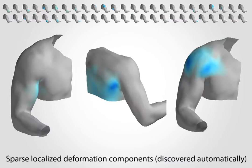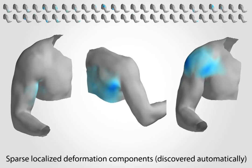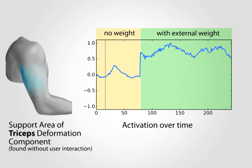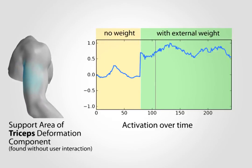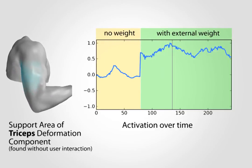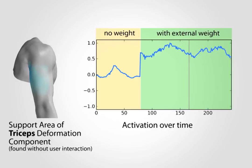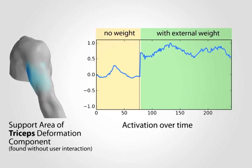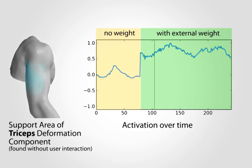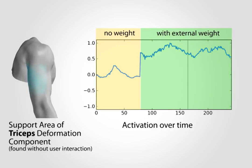Since our method provides a local decomposition, it separates visual effects of individual muscles and tendons. How a specific component is activated over time reveals interesting information about muscle activation. This bicep curl is done once without weight and then twice with a heavy barbell in the hand.